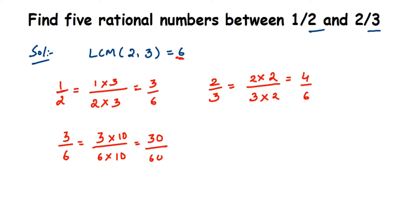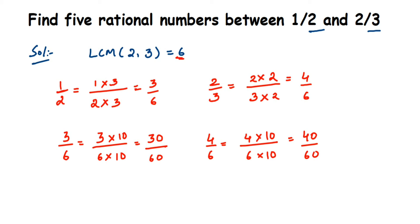Multiplying 3/6 by 10 in both numerator and denominator, we get 30/60. Similarly, multiplying 4/6 by 10, we get 40/60. Now between 30/60 and 40/60 we have many numbers — 31, 32, and so on.